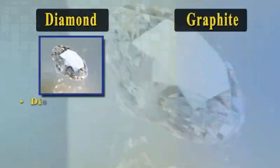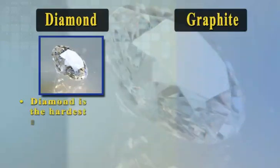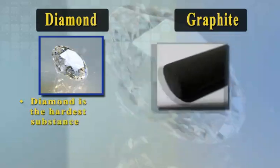For example, diamond is the hardest substance, while graphite is smooth and slippery.